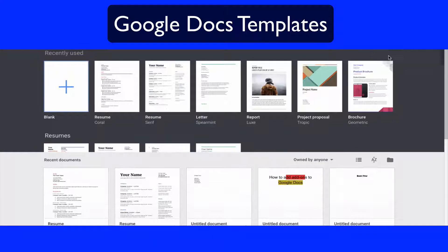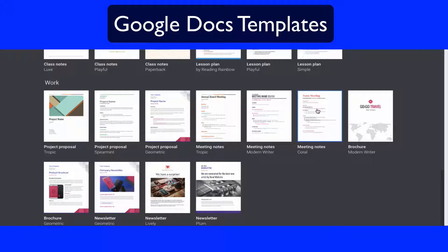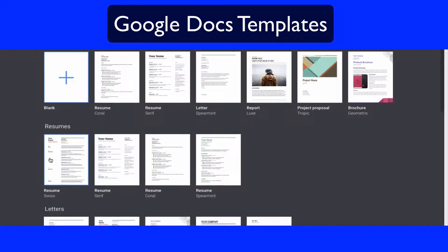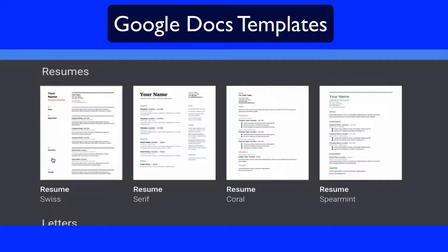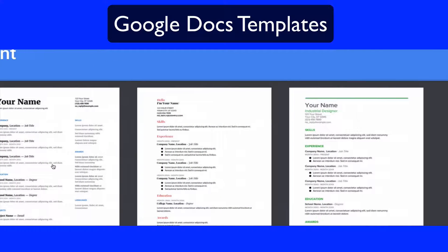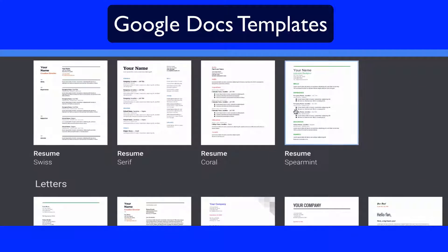There are a lot more options — look at all the different options, this is a serious amount. Some that could be beneficial: this brochure one looks great. If we scroll up, even in the resume section itself there are four different kinds of resumes you can choose from, which is great. I really like this green one — change the color of the green but keep the rest the same.